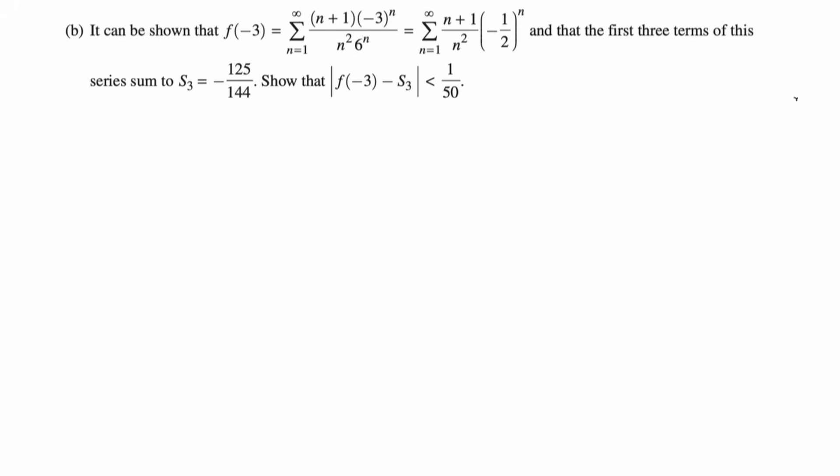Part (b): It can be shown that f(-3) simplifies down to the sum from 1 to infinity, (n+1)/n^2·(-1/2)^n, and that the first three terms of this series sum to S_3, which is -125/144. We want to show that the absolute value of the true value minus the approximation is less than 1/50. So I notice that (-1/2)^n, and I'm thinking, this is a convergent alternating series. I'm going to use the alternating series error.